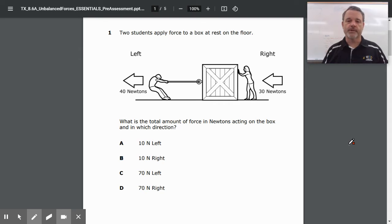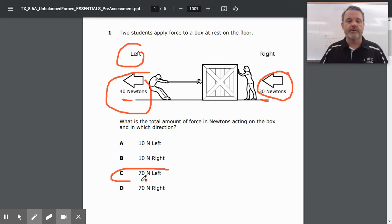If multiple forces are working on an object but they're going in opposite directions, you would subtract them from each other. So in this particular situation here, we have forces. They're both trying to move the box, so we're going to add them together. That's 40 plus 30 is 70 newtons. And they're going to the left, so it's 70 newtons to the left.